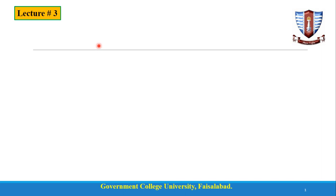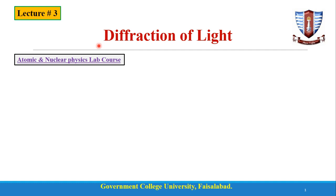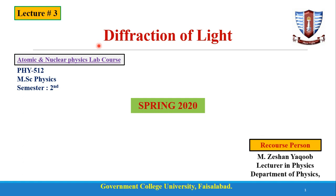Bismillahirrahmanirrahim. Dear students, I hope that you will be good today. Today we are talking about the third lecture. The topic of today's lecture is diffraction of light. It's for the atomic and nuclear physics lab course, PHY512, the course code for MSc physics, second semester, spring 2020. I'm Mohammad Gishan, lecturer in physics, Government College University, South Africa.